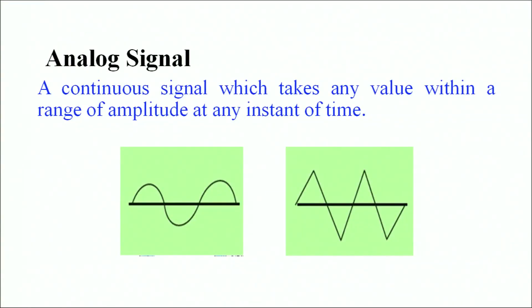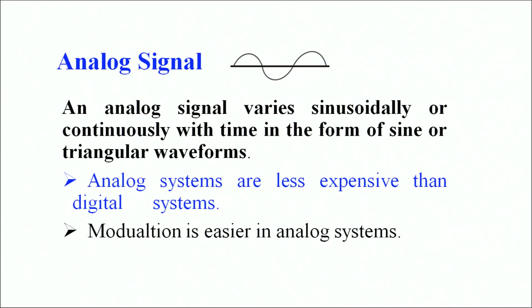Let's have a look at analog signals. An analog signal is a continuous signal which takes any value within a range of amplitude at any instant of time. You can see in the figure — this sine wave or this triangular wave pattern shown here is a continuous signal. A whole range of amplitude is taken at different instants of time. The signal varies sinusoidally or continuously with time in the form of a sine or a triangular waveform.